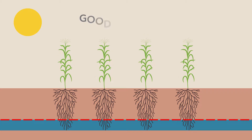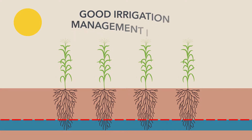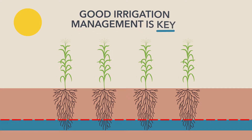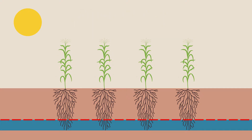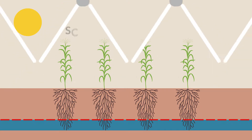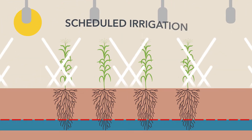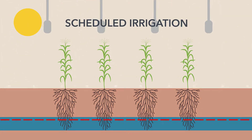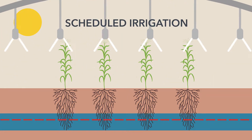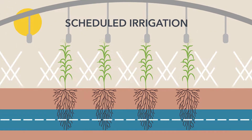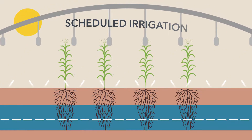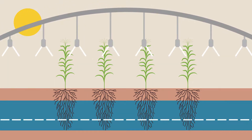This is where good irrigation management is key. By tracking the available water throughout the field, irrigations can then be scheduled to replenish the depleted water balance before this yield-reducing crop stress point is reached.